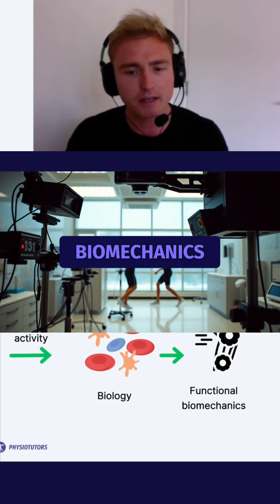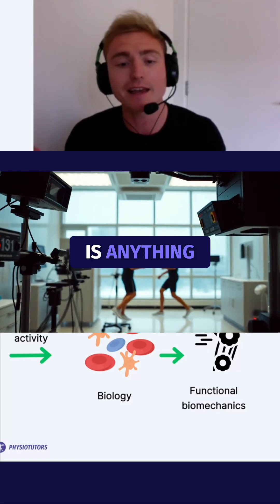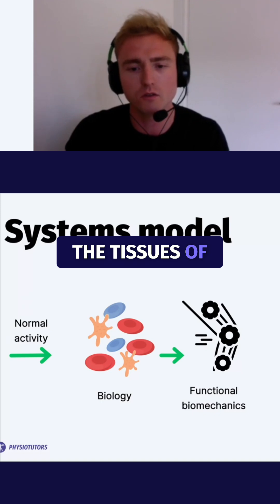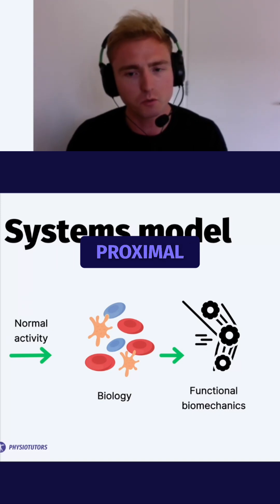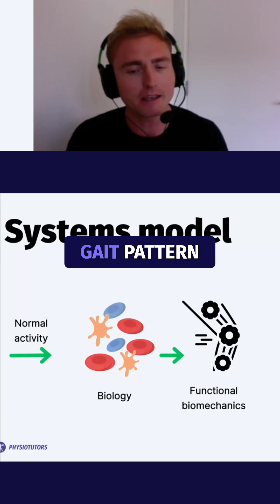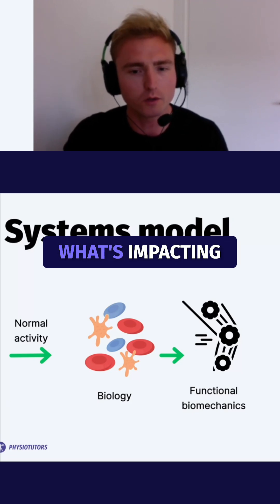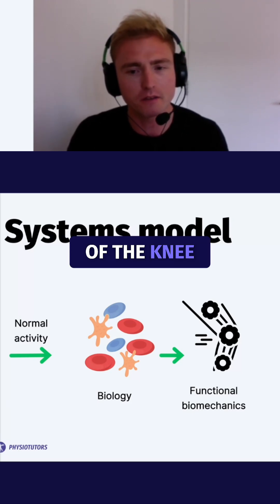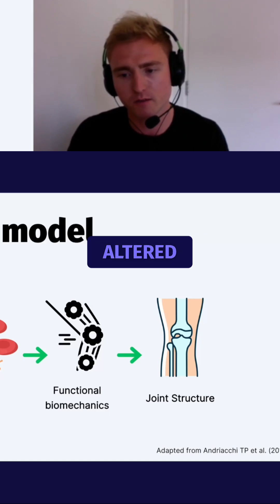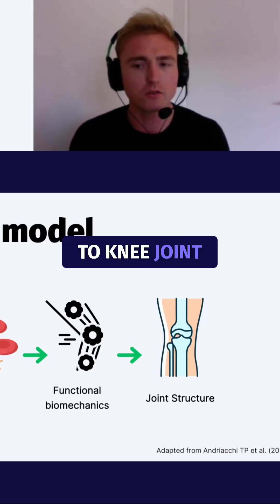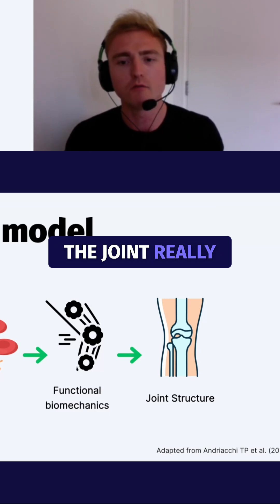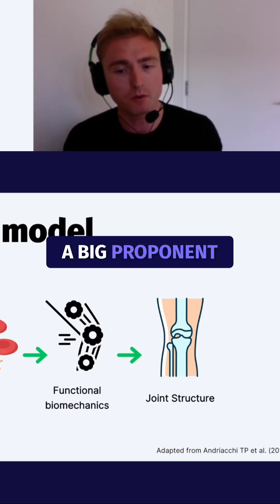That then feeds through to the next layer: functional biomechanics. The biomechanical input is anything leading to stimuli going to the cells and tissues of the joint — this includes proximal control, muscle control around the knee, gait pattern, and what's impacting that micro-environment of the knee. Lastly, this feeds through to joint structure, and when it comes to knee joint preservation, alignment and structure of the joint is a big proponent.